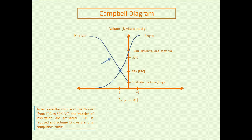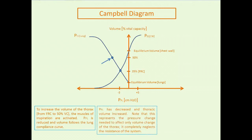You're going to move from here to here. Your pleural pressure has gone from, say, negative five centimeters of water to negative eight to ten centimeters of water, and you've increased your thoracic volume to 50% vital capacity. The pleural pressure has decreased and thoracic volume has increased. This is an important point discussed extensively in Chapter 1: this is a pressure change needed only to affect volume change. This pressure change says absolutely nothing about gas flow.